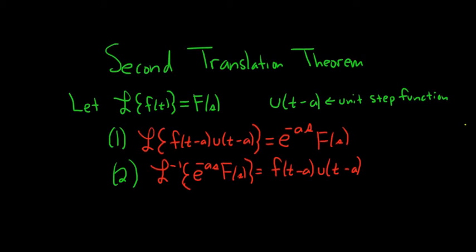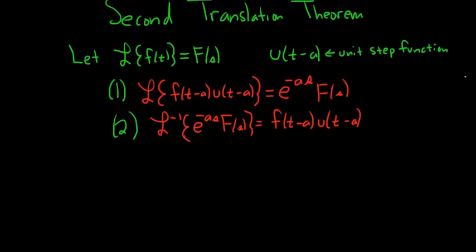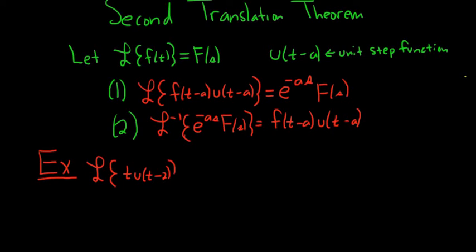Let's do one example of each. We'll start by taking the Laplace transform of t times the unit step of t minus 2. This one does require some work — it's not the easiest example but it's still pretty simple. You'll notice we have f of t minus a and u of t minus a, so here with t minus 2 it's clear that a has to be 2. So this is just t, but we would like it to be t minus 2.